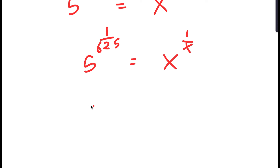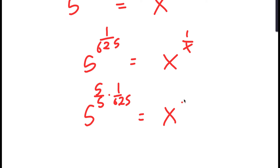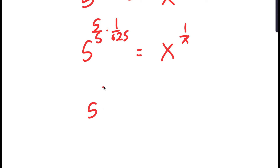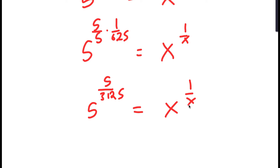Now, I'm going to multiply 1 over 625 with 5 over 5, which is the same thing as 1. And now I get 5 to the power of 5 over 3125 is equal to x to the power of 1 over x.